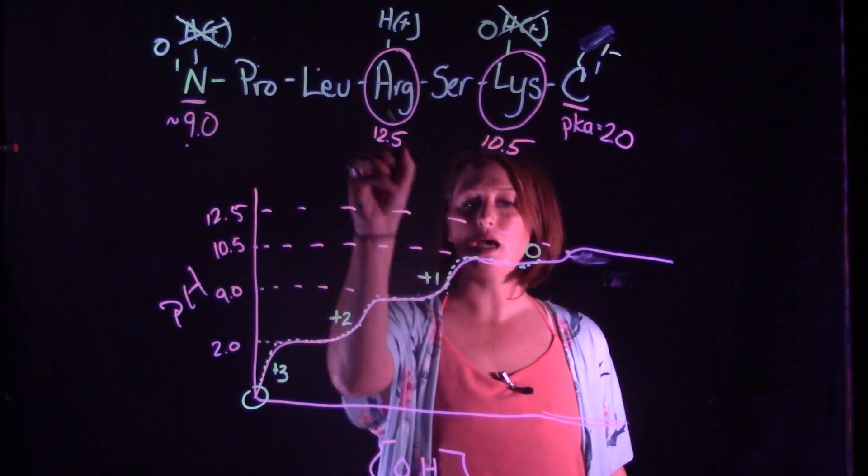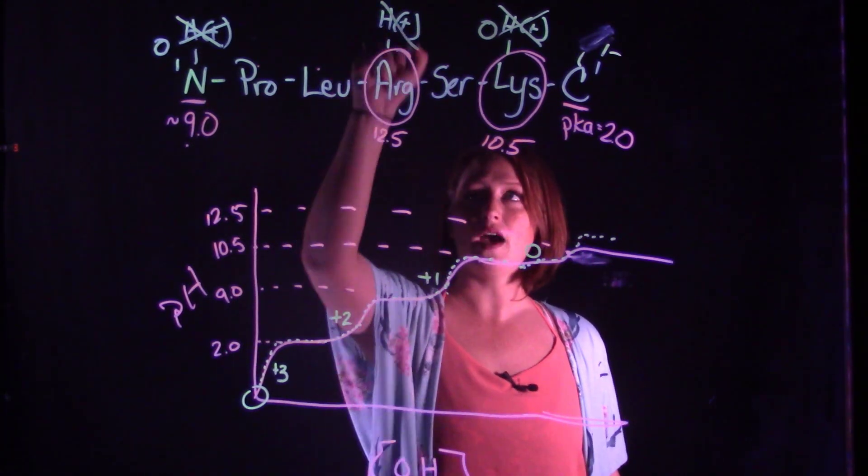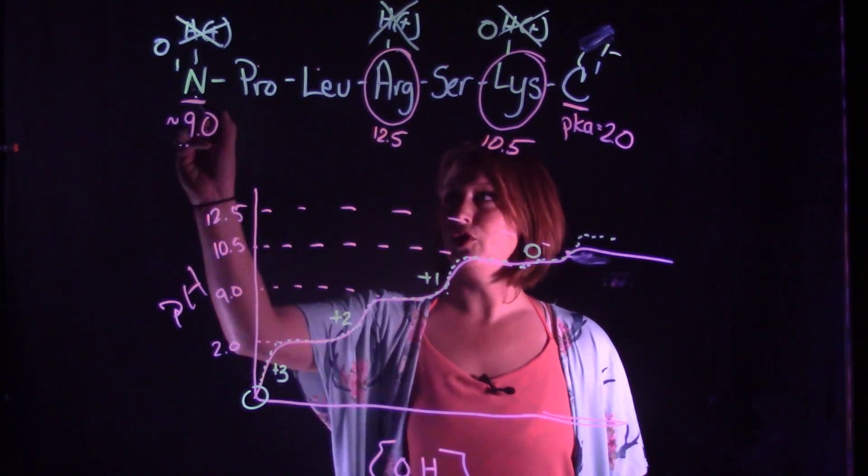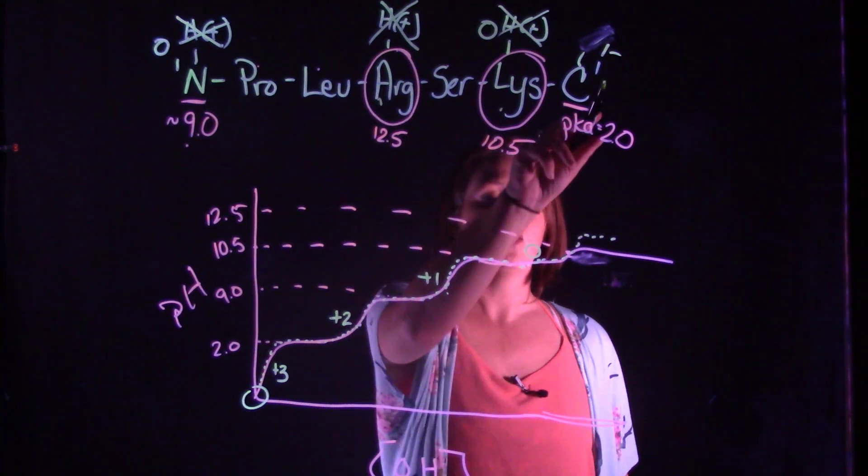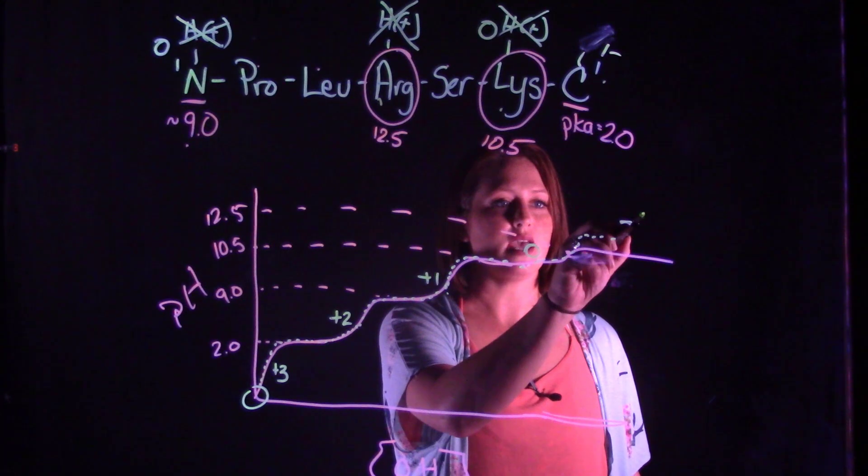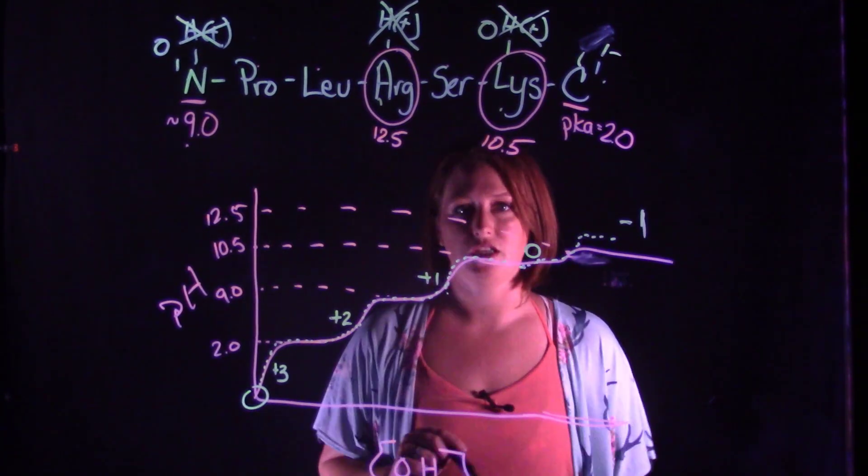As we continue to titrate above the pKa of arginine, we'll finally lose that last proton so that we're neutral on the N-terminus, neutral on arginine, neutral on lysine, one minus on carboxylic acid, giving us a negative one charge at pHs above arginine's pKa.